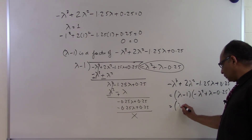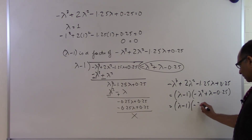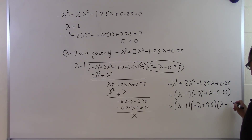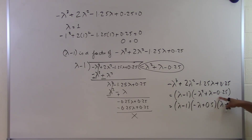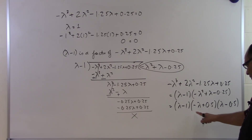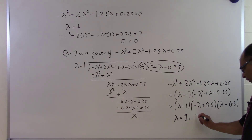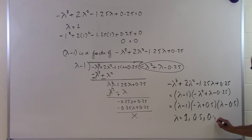This gives lambda minus 1, and I can write minus lambda squared plus lambda minus 0.25 as minus lambda plus 0.25 times lambda minus 0.25. Finding the zeros of the second-order polynomial using the quadratic formula gives roots minus 0.5 and 0.5. So putting everything equal to 0, we get lambda equal to 1 as one zero, and 0.5 and 0.5 as the other two roots of the cubic equation — giving us three eigenvalues.